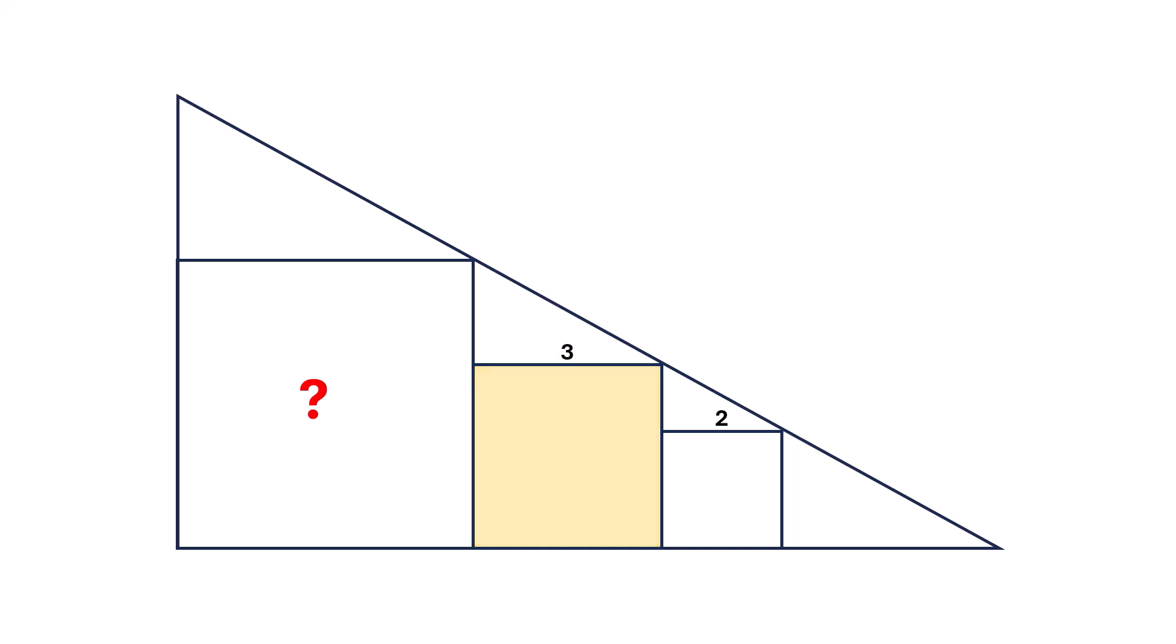Now, notice that this length is three, and this length is two. The remaining length will be three minus two, which is one. So, substituting this value, we get the following configuration.